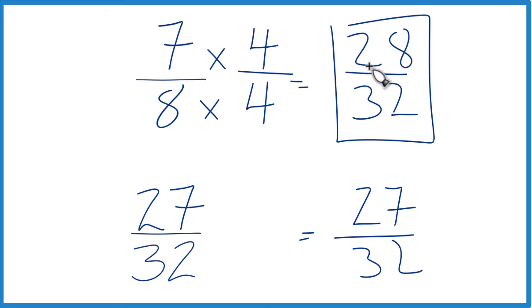Since these are equivalent, they have the same value, that means that 7 8ths, that's going to be greater than 27 32nds.